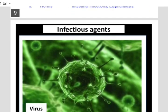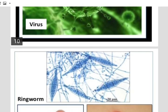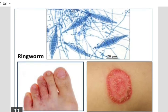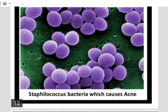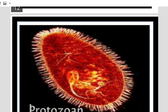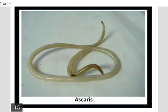You can see diagrams given in your NCERT book on page 181 — go through those. This is a virus, which is acellular and causes several diseases. This is ringworm, a kind of fungi that causes skin diseases. This is Staphylococcus bacteria, which causes acne on the skin, especially on the face. This is a protozoan — one of the dangerous ones is Leishmania, which causes kala-azar. And this is Ascaris, which is a kind of worm.